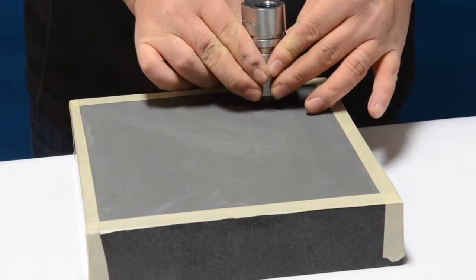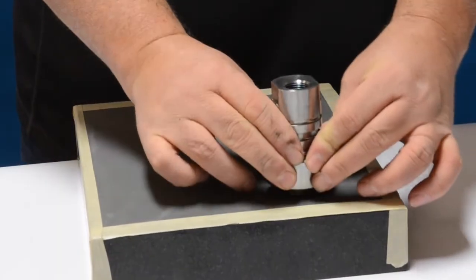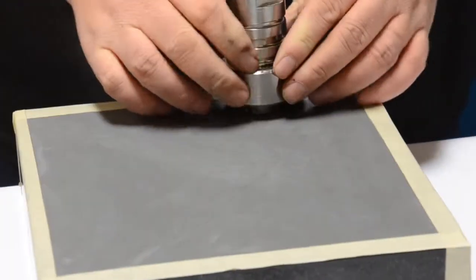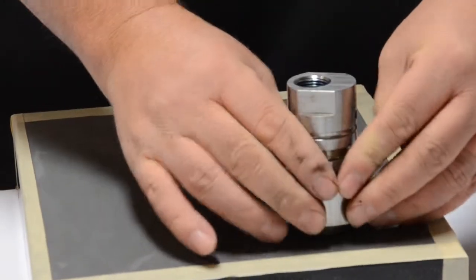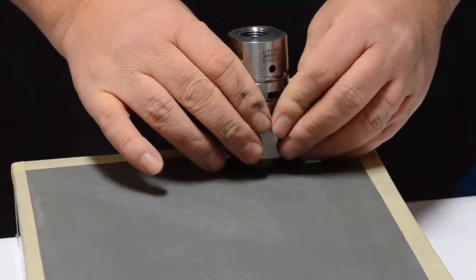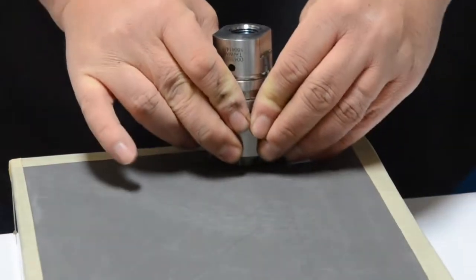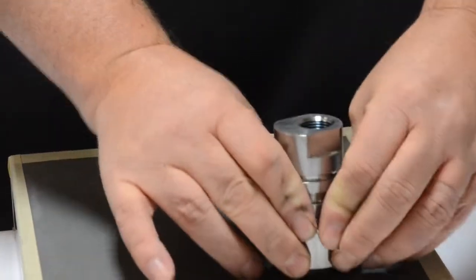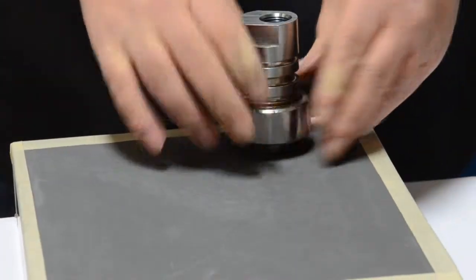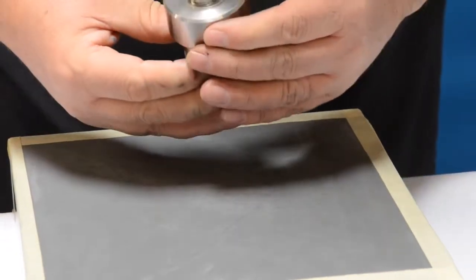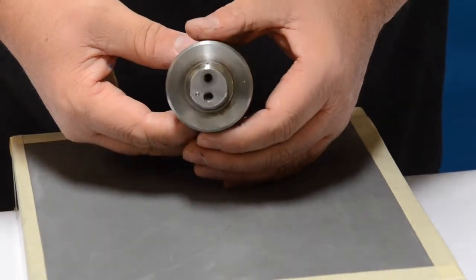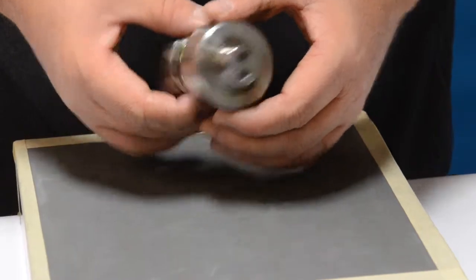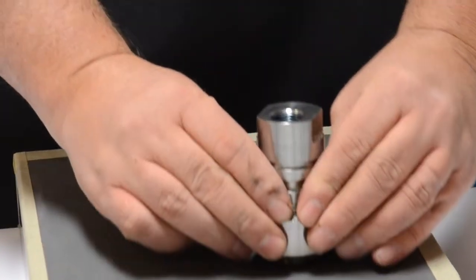Typical lapping procedure is to do either a figure eight. I personally like to do a back and forth with a 90 degree twist of whatever it is I'm lapping. Every so often you're going to want to take the check valve off of the plate and inspect that face. You'll see over time you're going to get that mirror finish and you can see how deep the gouges are.